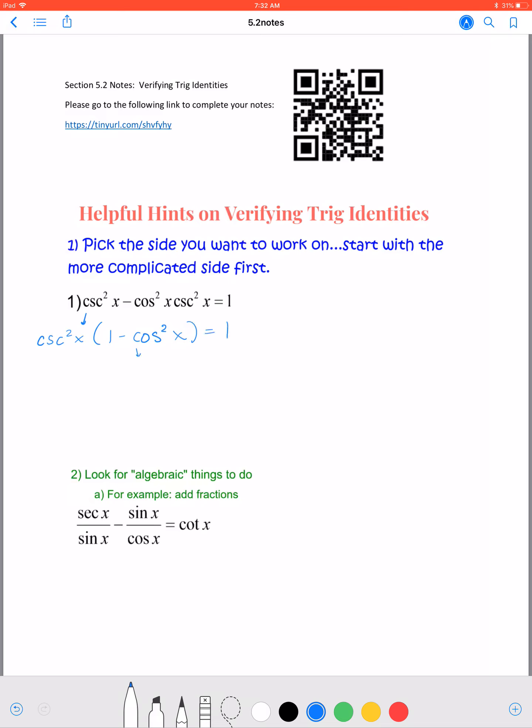Now here we can use the Pythagorean identity to say this is sine squared of x times cosecant squared of x. And there we use the Pythagorean identity.